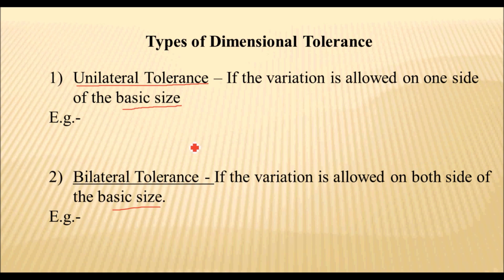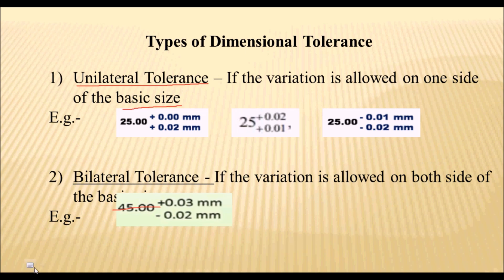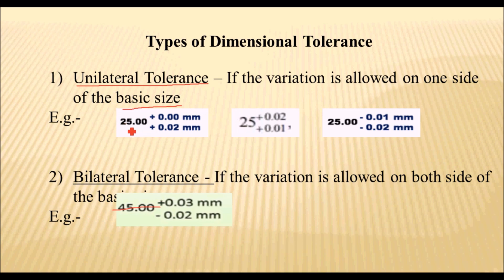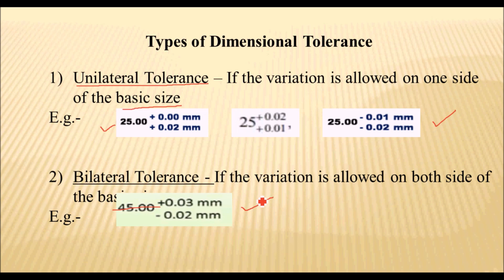Let us see some examples to understand this. Here, 25 mm is the basic size and variations are provided on the positive side only, so it is unilateral tolerance. Again, if variation is on the positive side only, it is called unilateral tolerance. But if variations are allowed on both sides — for example, +0.03 mm on the positive side and −0.02 mm on the negative side — then it is called bilateral tolerance.